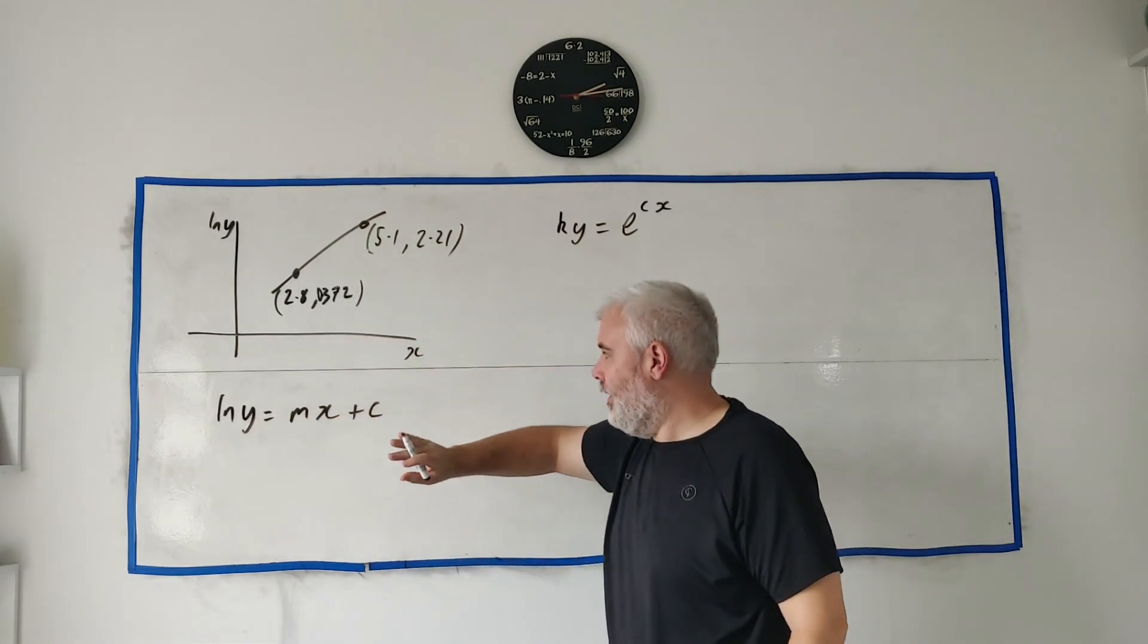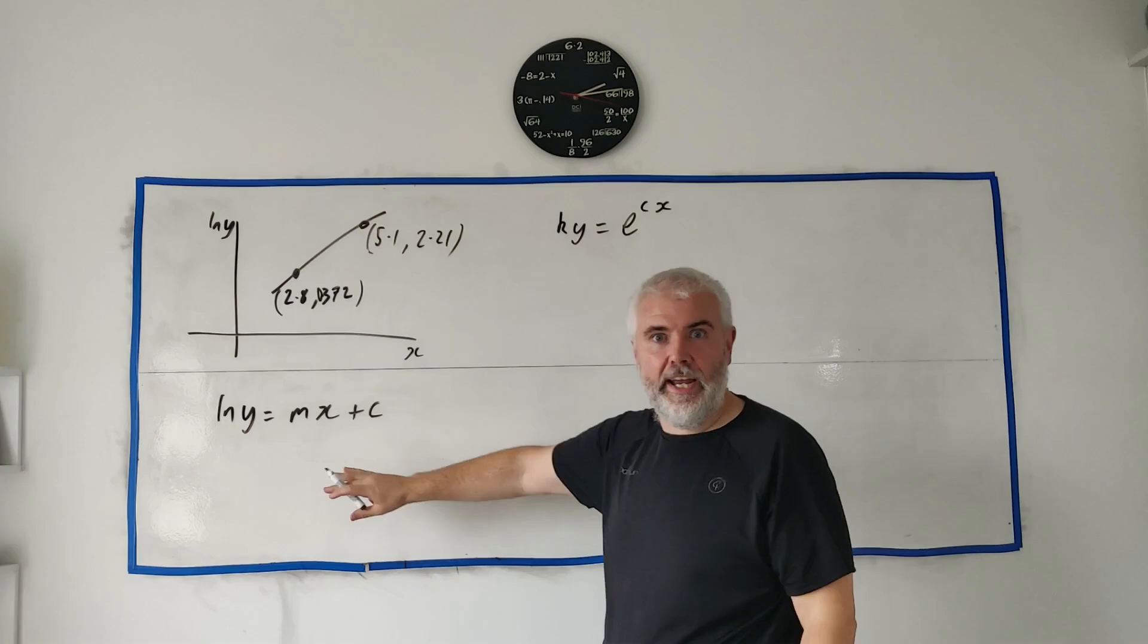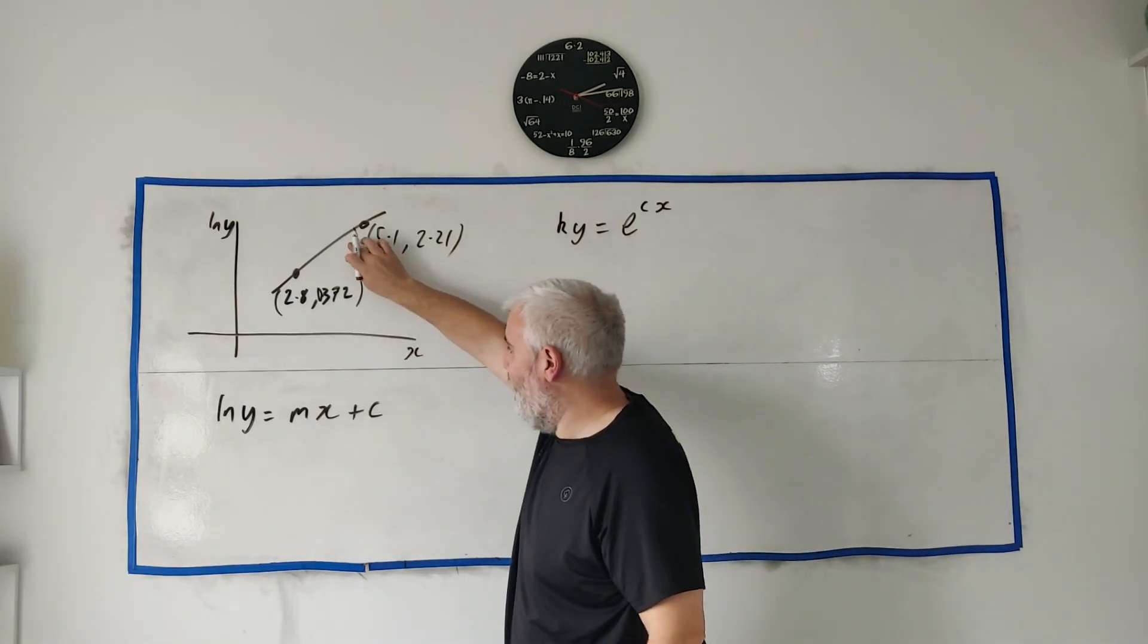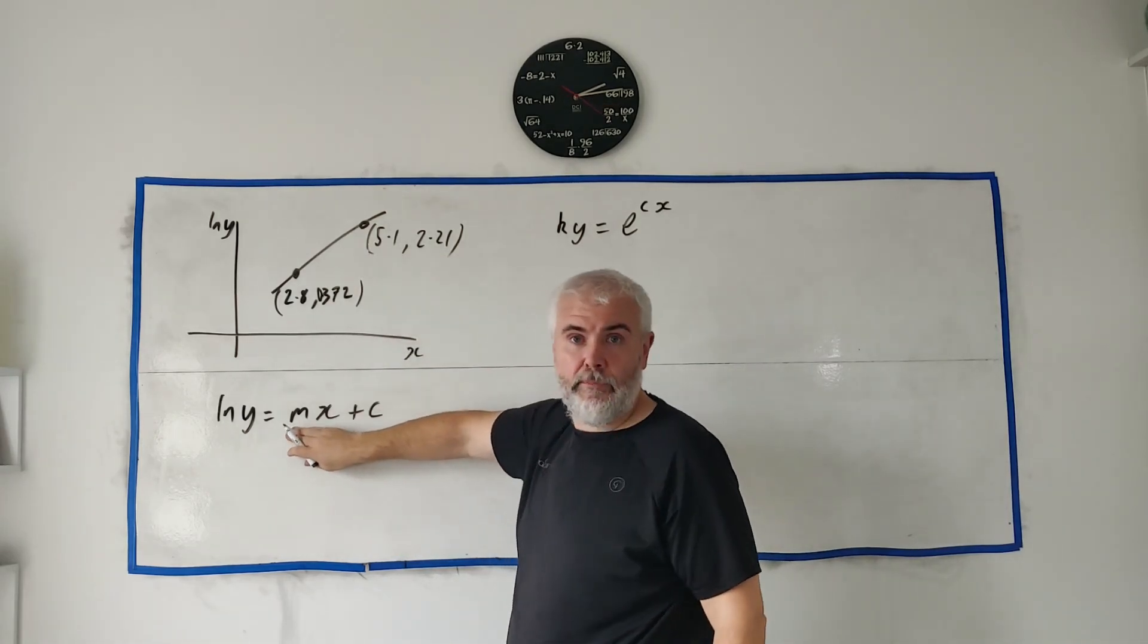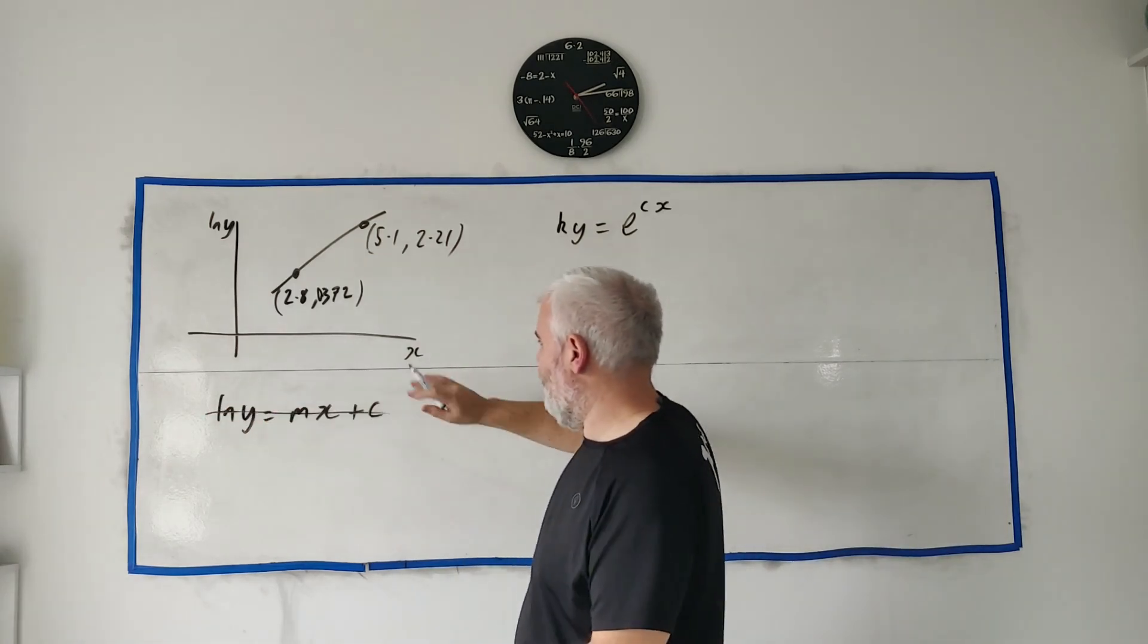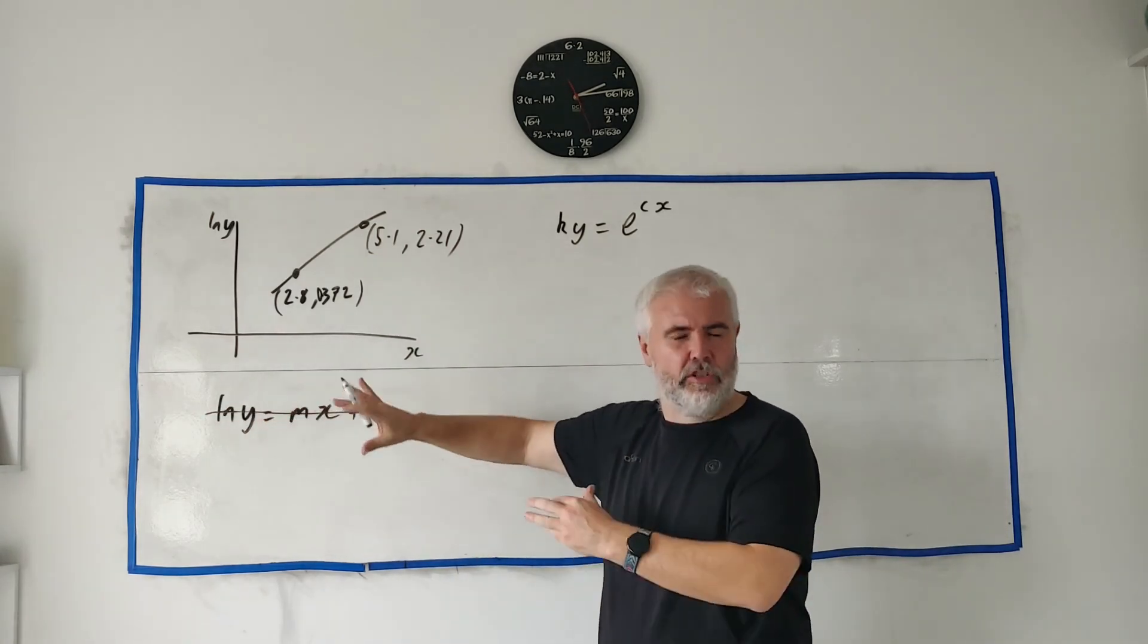The x-axis is x, that's fine. The y-axis though is actually natural log of y, so be careful about that. This is what we know the line looks like, so the slope of that line is whatever numbers here.